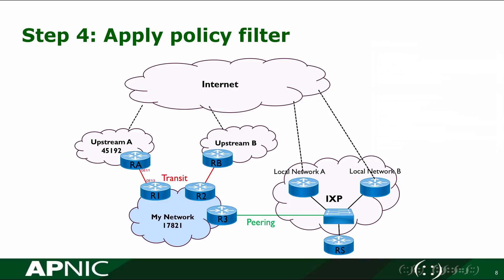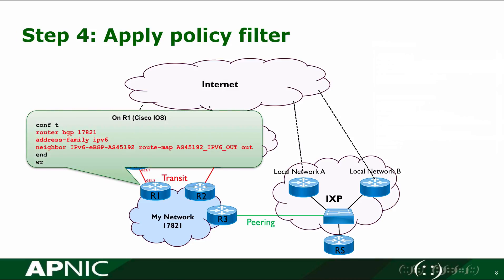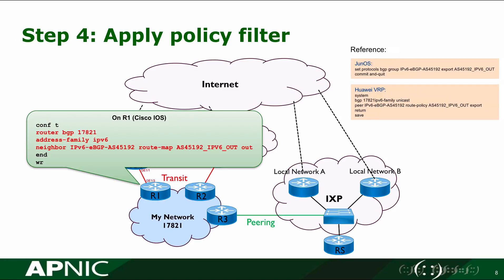In Step 4, before we advertise the prefix, we apply the policy filter created in Step 2. We don't want unnecessary prefixes to be advertised incorrectly — this is how we secure our announcement. In the BGP view, we get into the IPv6 address family and apply the prefix filter in the outbound direction with the peer group. Similar configuration for Juniper and Huawei is shown as reference.